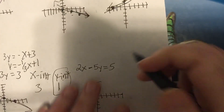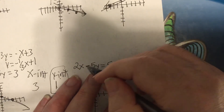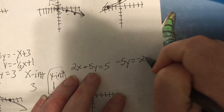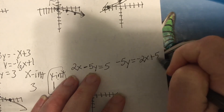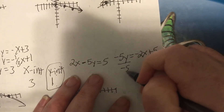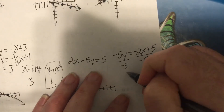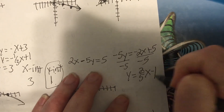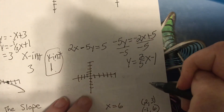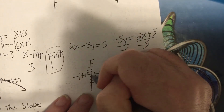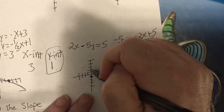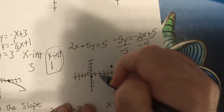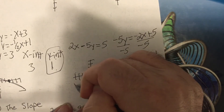To find the slope and y-intercept, you solve for y. Subtract 2x and then divide by negative five. So y equals two-fifths x minus one — two negatives make a positive — so y-intercept is negative one and slope is two-fifths. That's up two, right five, or down two, left five.